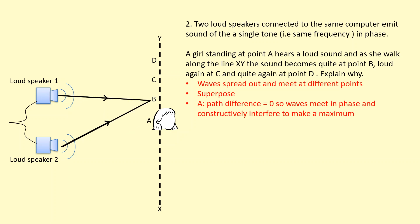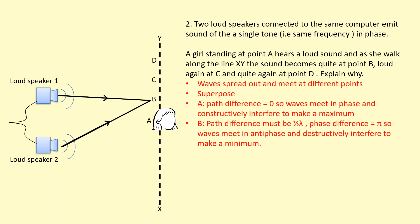When she walks to point B, it's a minimum, so there must be destructive interference. The sound from speaker B has traveled an extra distance compared to speaker 1 — specifically half a wavelength extra — which gives a phase difference of π, meaning antiphase. That causes destructive interference and she hears a minimum there.